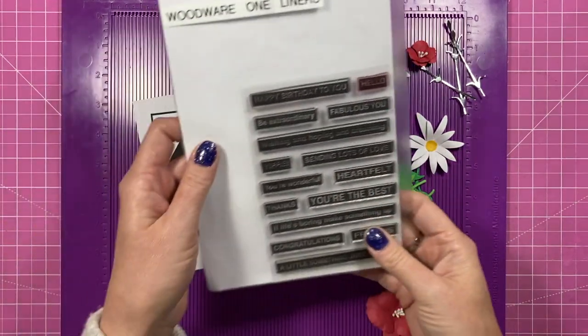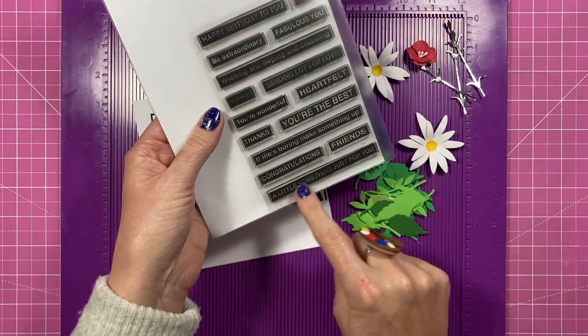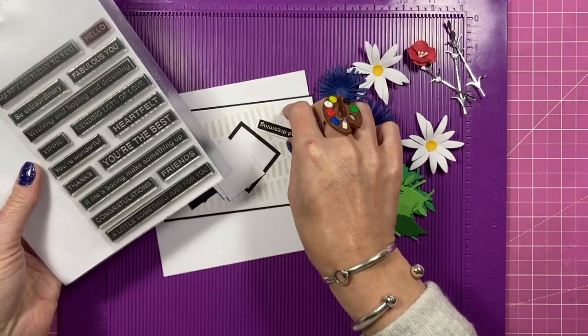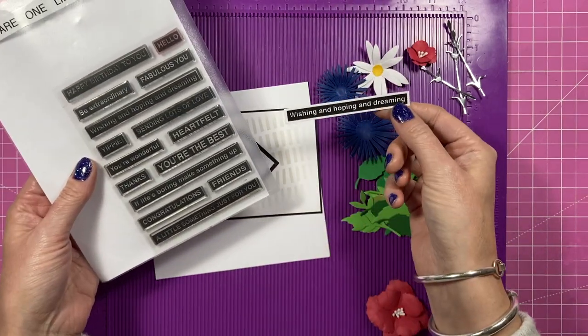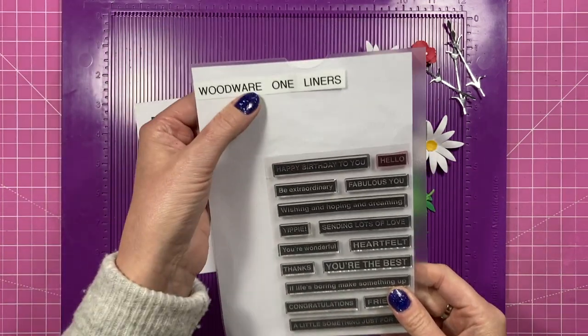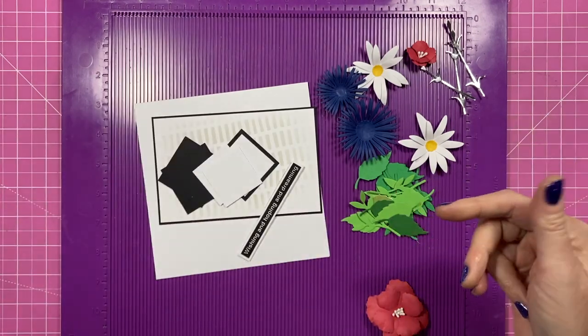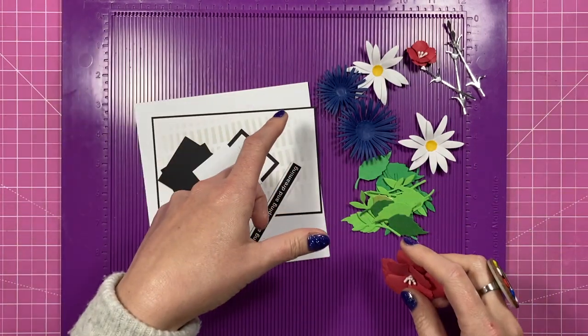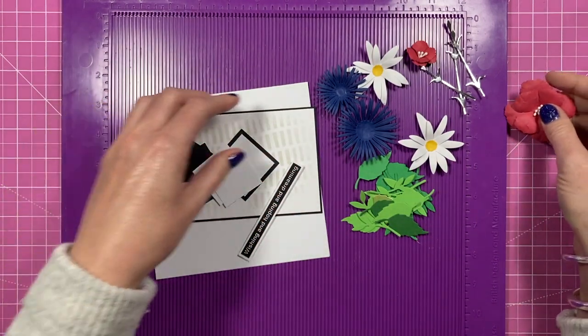For the first one I used a little something just for you which is this one down here and then this card is going to have this one which says wishing and hoping and dreaming. So it's like a just because card really and this is an old woodware one-liners but it might still be available. As always all of the products that I'm sharing today are linked in the description box below.